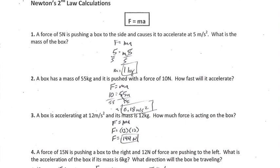Look at page 7 here. Number one: a force of 5 newtons is pushing a box to the side, causes it to accelerate at 5 meters per second squared. What's the mass of the box?